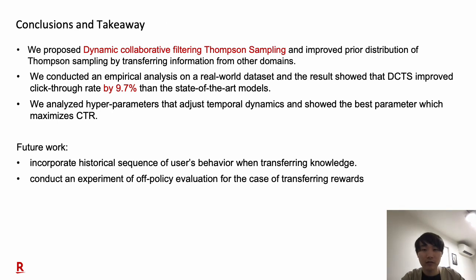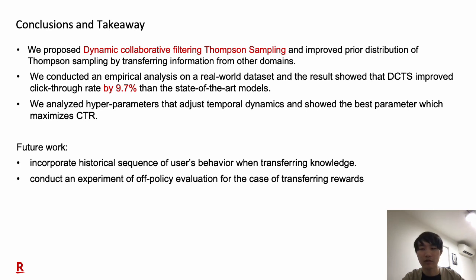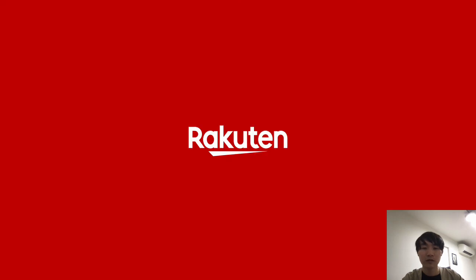As a conclusion, we proposed dynamic collaborative filtering Thompson sampling and improved the prior distribution of Thompson sampling by transferring information from other domains. We also conducted an empirical analysis on a real-world dataset, and the result shows that DCTS improved click-through rate by 9.7% compared to state-of-the-art models. Finally, we analyzed the hyperparameter that adjusts temporal dynamics and identified the best parameter to maximize CTR. As future work, we will incorporate the historical sequence of users' behavior when transferring knowledge, and we will conduct experiments on off-policy evaluation for the case of transferring rewards. Thank you for listening.